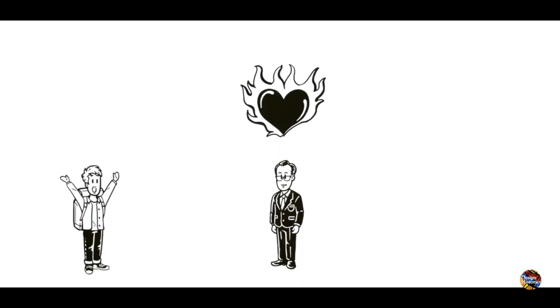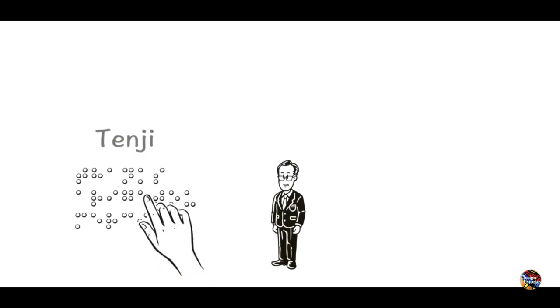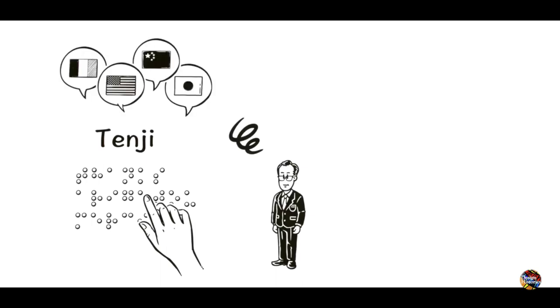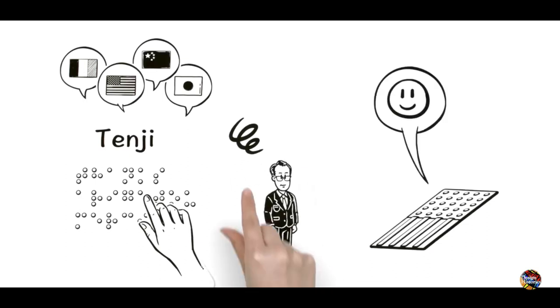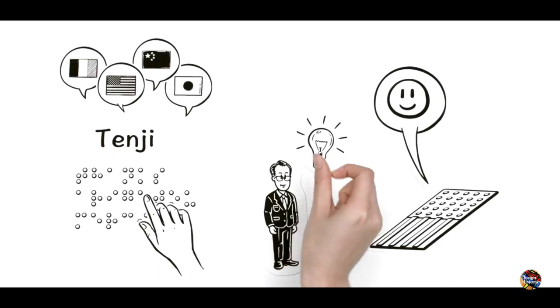Ken is amazed at how one man achieved so much good. But our story doesn't end there. Miyake was inspired by braille, which is called tenji in Japanese. But braille is difficult to learn, and each language has its own version. Miyake's tiles, on the other hand, are a universal design that anyone can quickly understand.